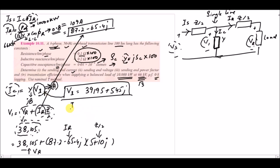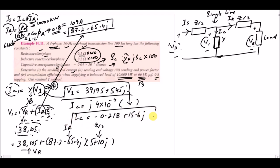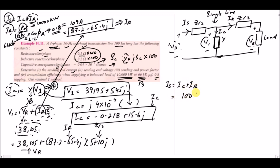Using V1 in equation (a), Ic = j4×10⁻⁴ × V1, which gives Ic = −0.218 + j15.6 A. Now with both Ir and Ic calculated, the sending end current is Is = Ic + Ir, yielding Is = 100 ∠−29.78° A.